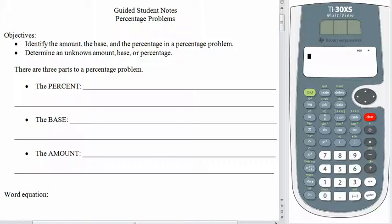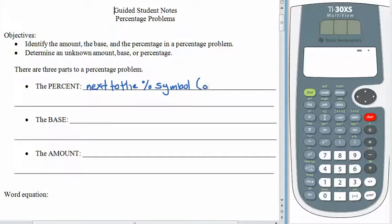Alright, so in a situation we have percentage problems, and there are three parts to a percentage problem. It stands to reason, of course, that one of the parts is the percent, and it's pretty easy to find the percent because this is next to the percent symbol or the word percent if we're writing things out. The important thing to think about here is that when we're working with an equation, we're going to need to convert the percentage to a decimal.